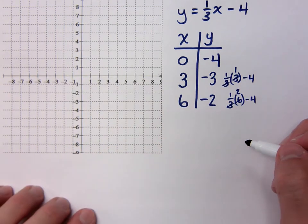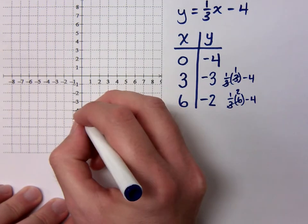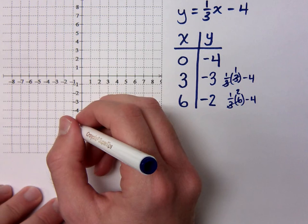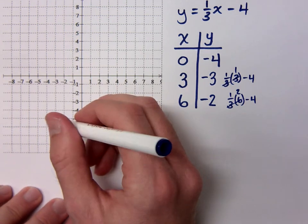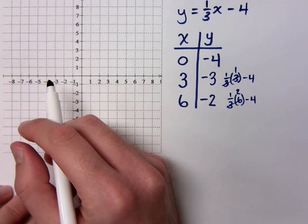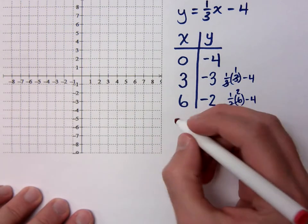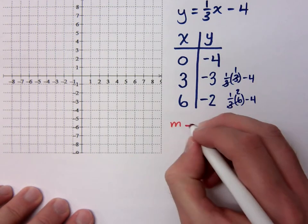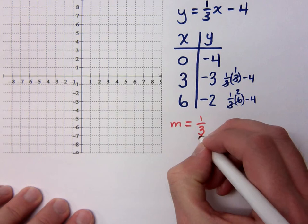Let's see what happens when I plot these points. A student asks: isn't the slope 1 third? Yes, the slope is 1 third. So can we just use the y-intercept and the slope directly? Right — if we know the y-intercept and the slope, we can go straight to graphing. Since this equation is solved for y, you can identify that the slope is 1 third.